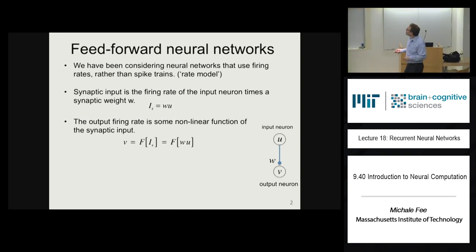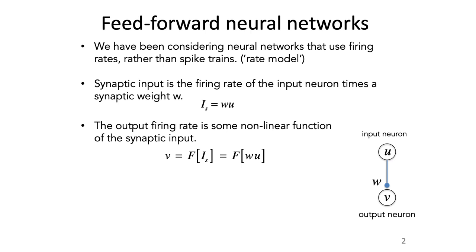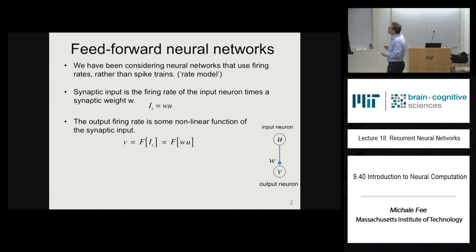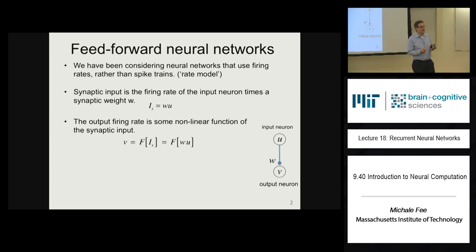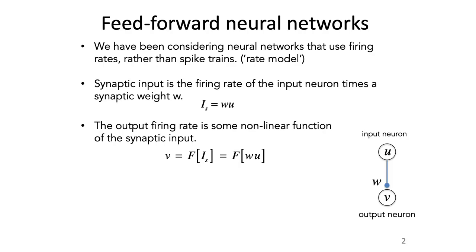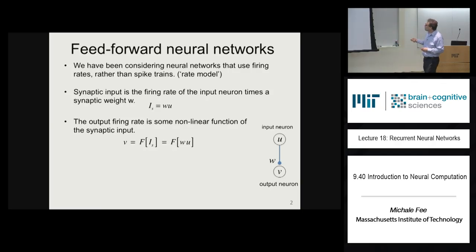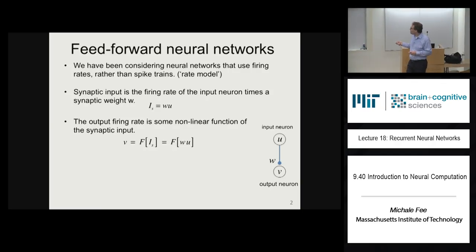So a brief recap of what we've been doing. We've been working on circuit models of neural networks, working on what we call a rate model, in which we replaced all the spikes of a neuron with essentially a single number that characterizes the rate at which a neuron fires. We introduced a simple network with an input neuron and an output neuron with a synaptic connection of weight w between them, leading to a synaptic input proportional to w times the firing rate of the input neuron.